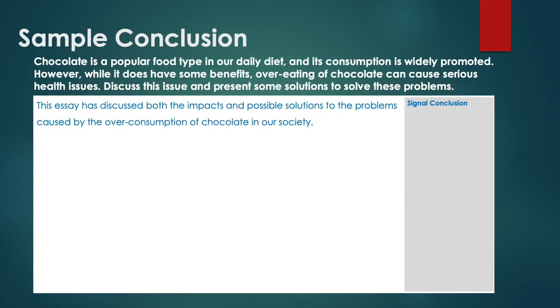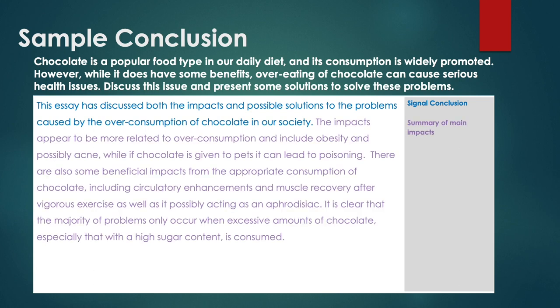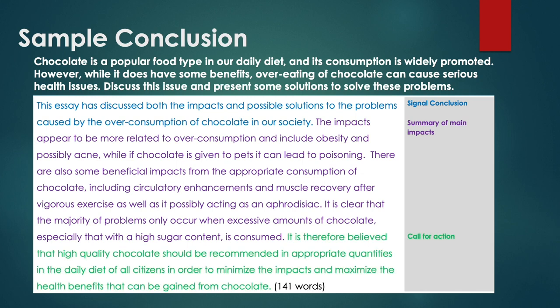Here's a sample conclusion using the problem solution essay on chocolate. It's colour coded into different parts. It starts with the signalling of the conclusion — it's important to signal your conclusion for the reader: 'This essay has discussed impact and possible solutions.' Next in purple we have a summary of the main body — the health problems that chocolate causes and that it can also be very dangerous if you give it to your pet. Some positive impacts are also mentioned. Then in green it's the final part, the call for action. It's very important to include this in your essay. The writer recommends that high quality chocolate be used and eaten in appropriate quantities. That's a sample conclusion, around 140 words, that you can adapt for your own essay.